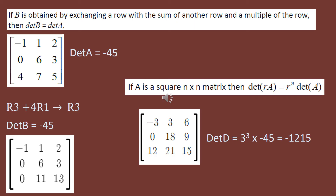Multiplying one row by a scalar gives you a determinant that is that scalar times the original determinant. Another elementary row operation is replacing a row with the sum of that row and a scalar multiple of another row, and surprisingly, you do not change the value of the determinant. For example, replacing row 3 with 4 times row 1 added to row 3 gives a new row of 0, 11, 13, and the determinant of that new matrix is still negative 45.